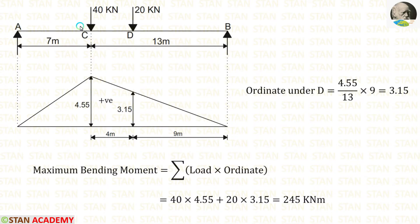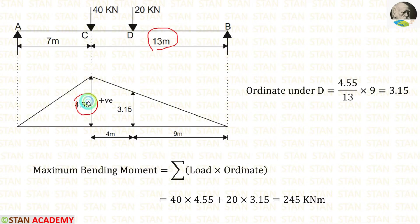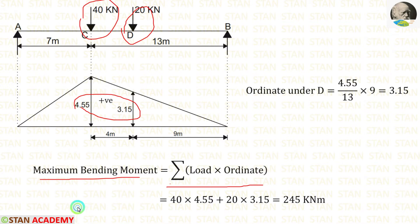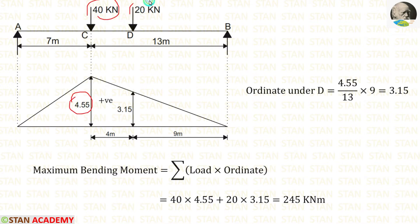With 40 kN at point C, we already calculated the ordinate at C as 4.55. Now we calculate the ordinate under the 20 kN load, which is 9 meters from C. For 13 meters the ordinate is 4.55, so for 9 meters: (4.55/13) × 9 = 3.15. The maximum bending moment is: ΣW × ordinate = 40 × 4.55 + 20 × 3.15 = 245 kN·m.